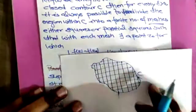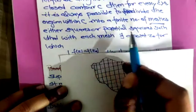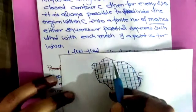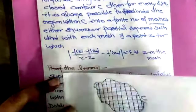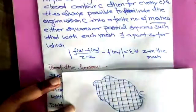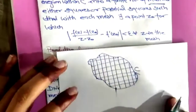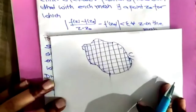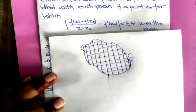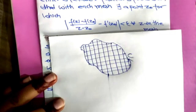We find a point Z0 in any square or partial square for which f(z) is analytic. My point is that I am going to prove this lemma by using the contradiction method.